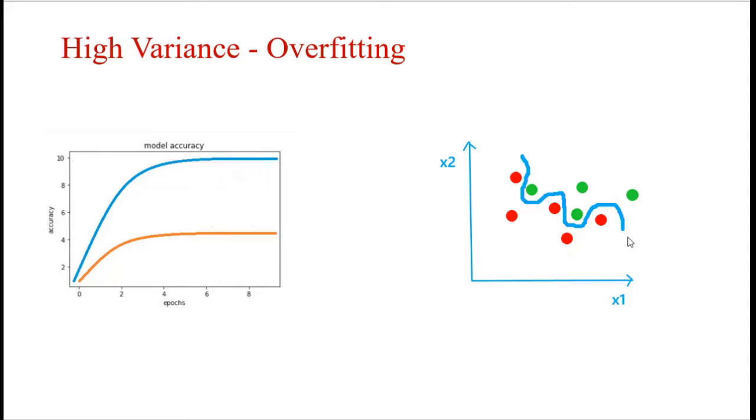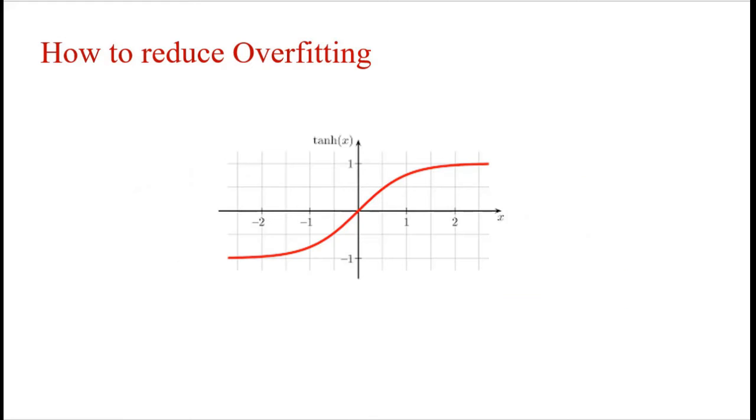High variance or overfitting can be avoided by preventing our neural network from learning such complex functions. By avoiding this, we will reduce the high variance. The thumb rule says we can reduce overfitting by controlling w transpose x plus b's output.